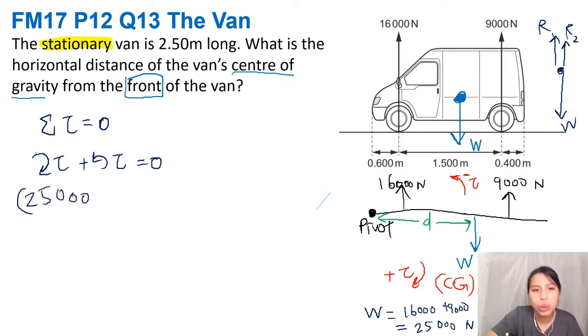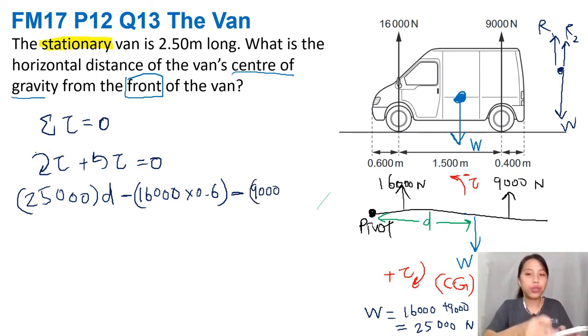So 25000 times, what's the distance? We don't know, we're trying to find that. D. Plus, oh I said the other one's all going to be minus. So minus 16000 times, let's put the times in the bracket. How far is that 16000 reaction force from the front of the van? 0.6 meters. Minus the other thing that's going to push it clockwise is the 9000 Newton reaction force. How far is it away? 1.5 plus 0.6 meter, so that's 2.1 meters.